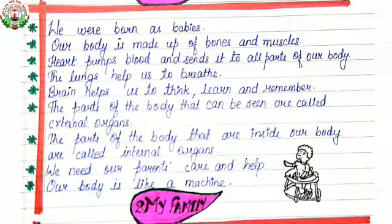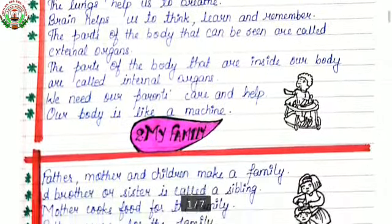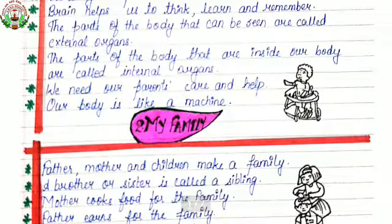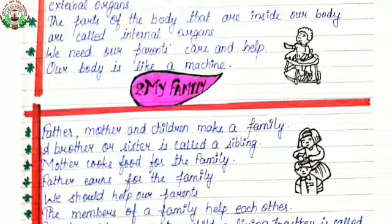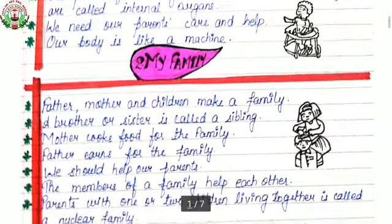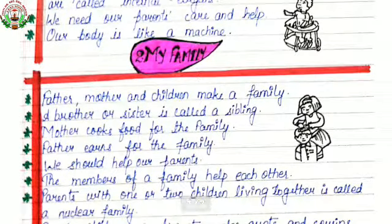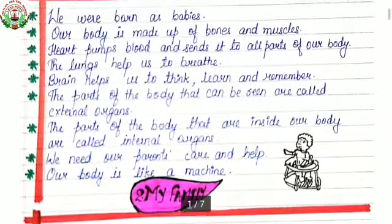Who helps you to think, learn and remember? Your brain. The parts of the body that can be seen are called external organs. The parts of the body that are inside our body that we are not able to see, because they are covered with skin, are called internal organs. We need our parents' care and help. Our body is like a machine.